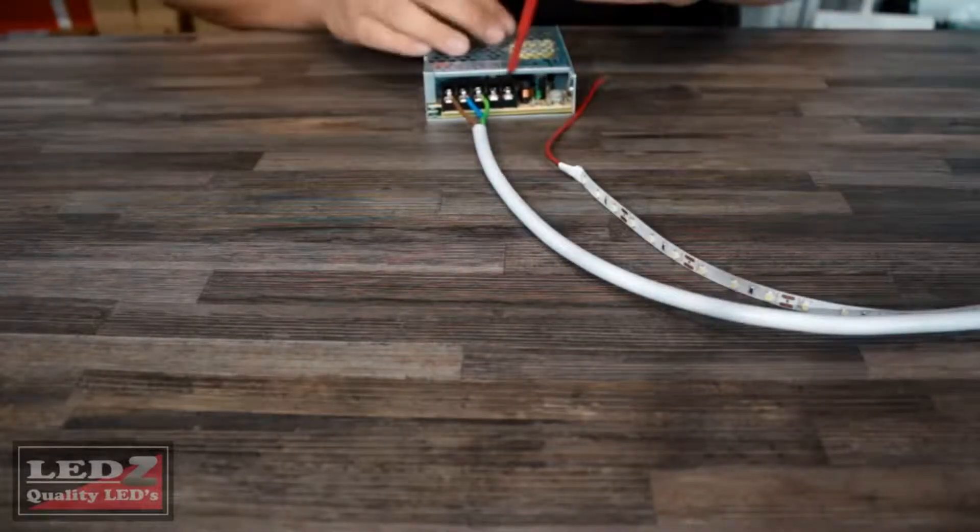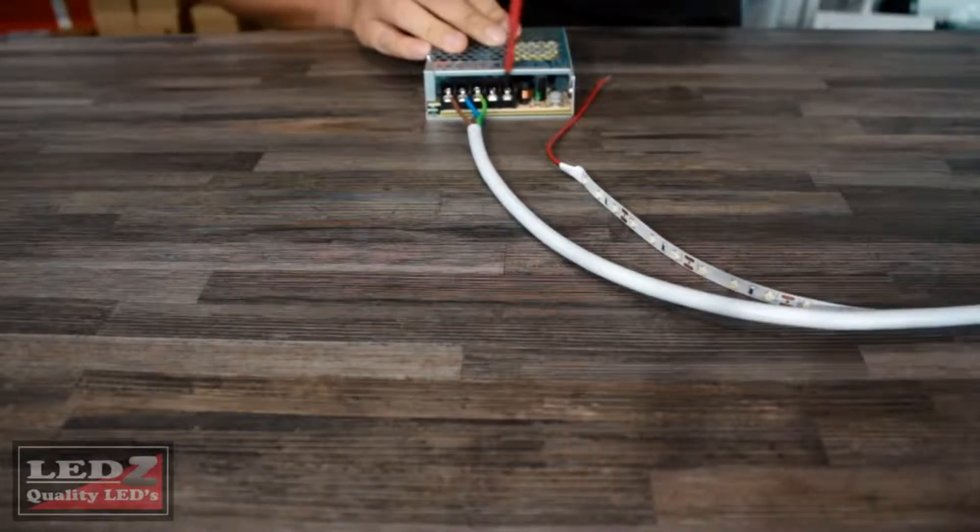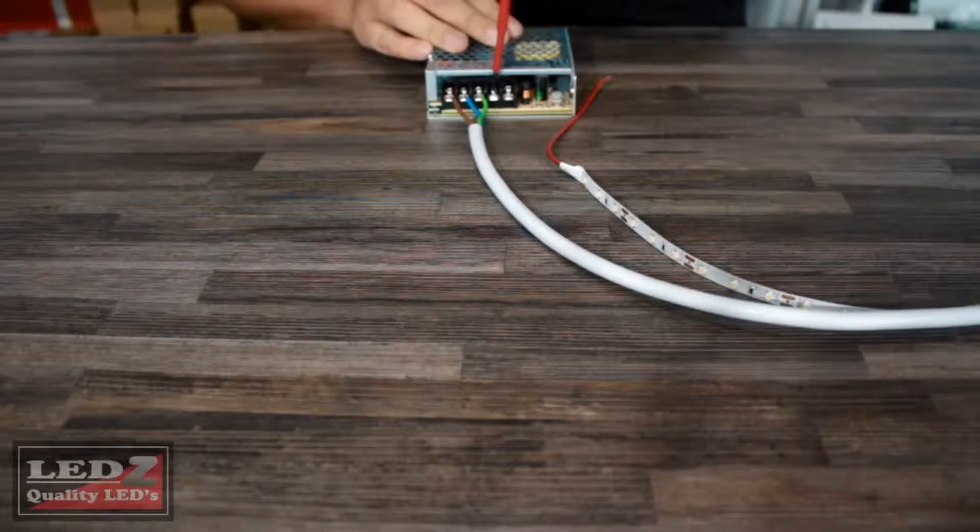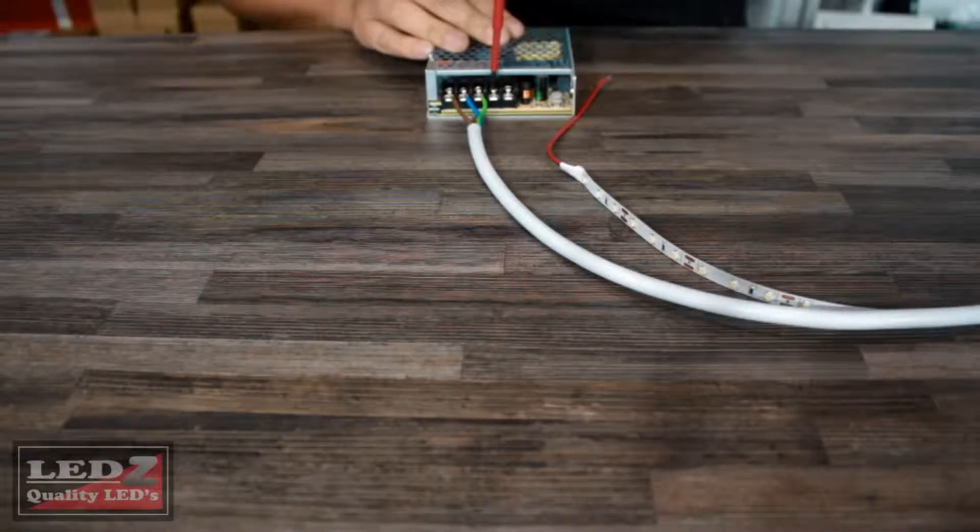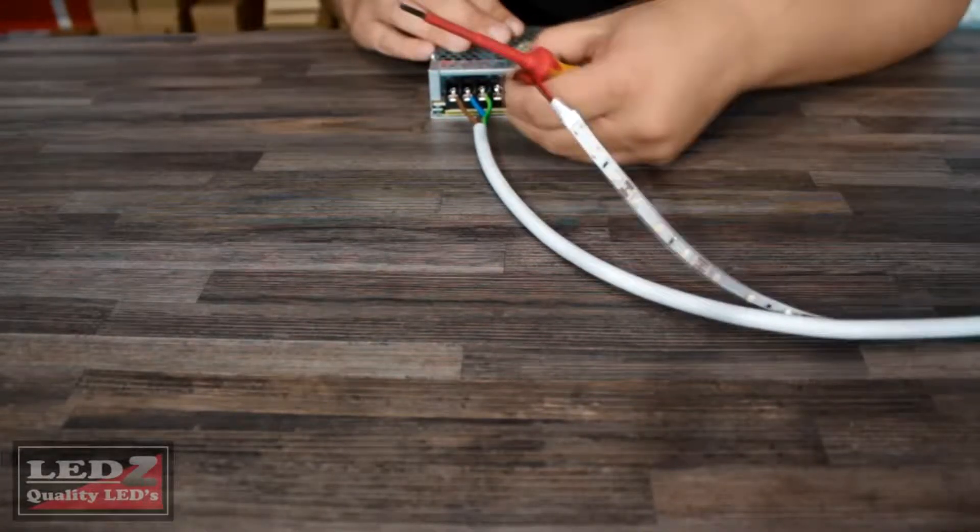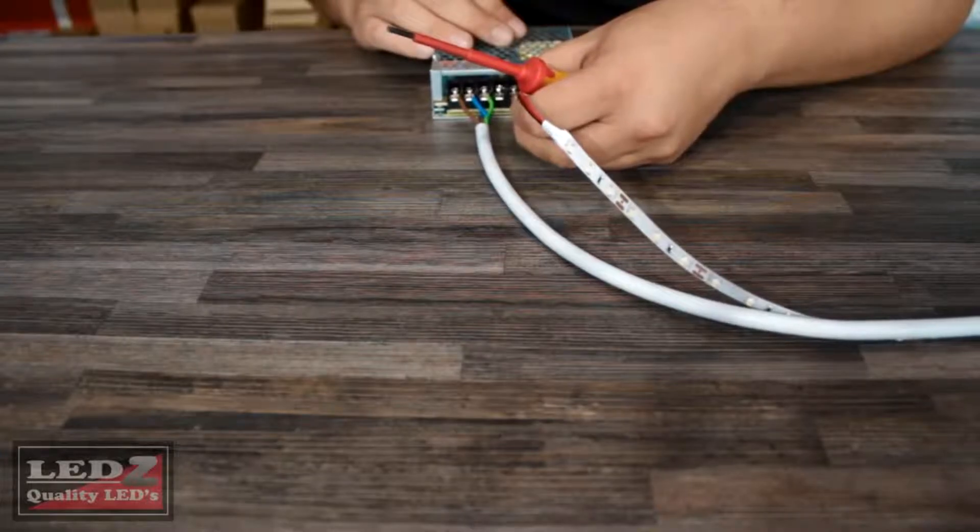Now we've come to the part where we need to wire in our 12 volt LED strip lights. So what you're going to do here is you're going to just loosen the V negative and V positive screws, and take the red cable and insert it under the V positive slot and tighten that screw.